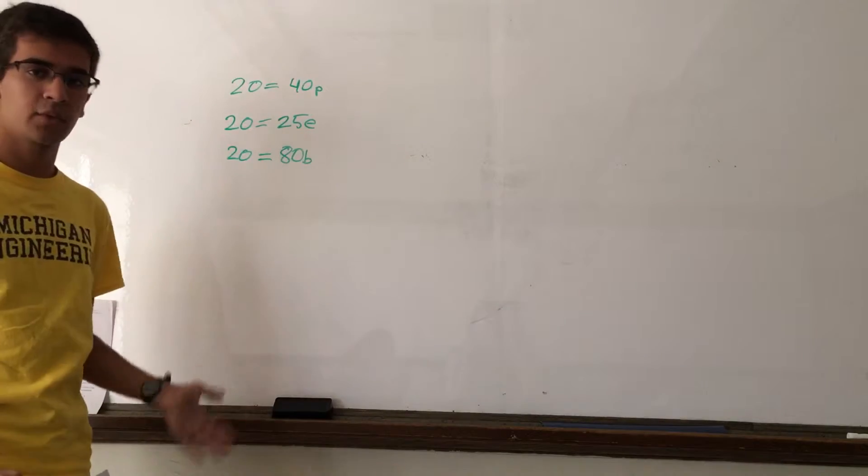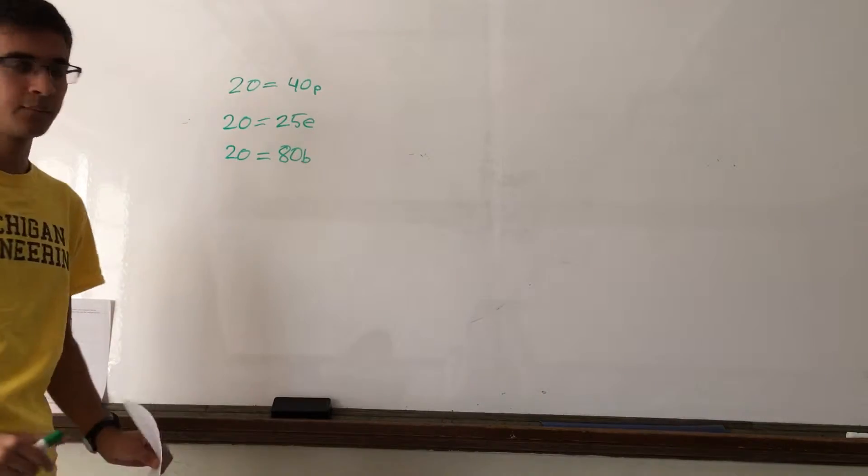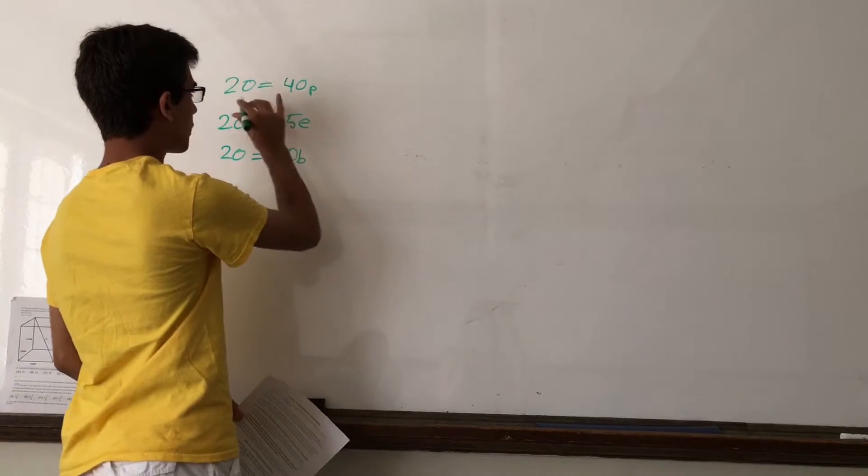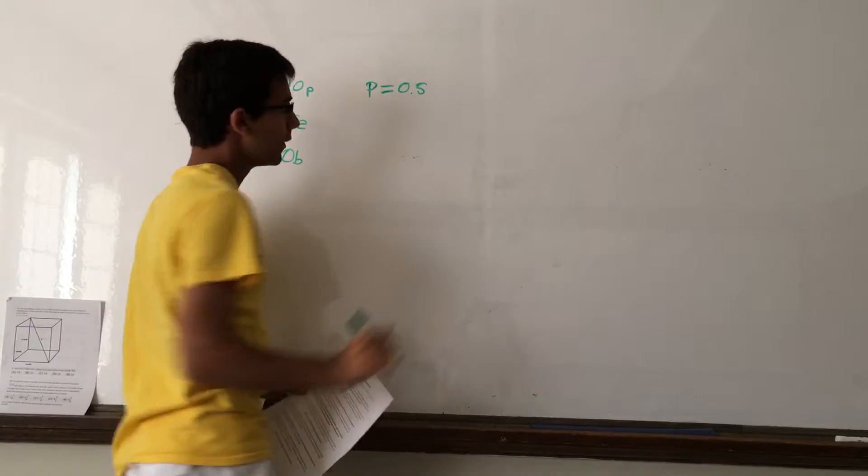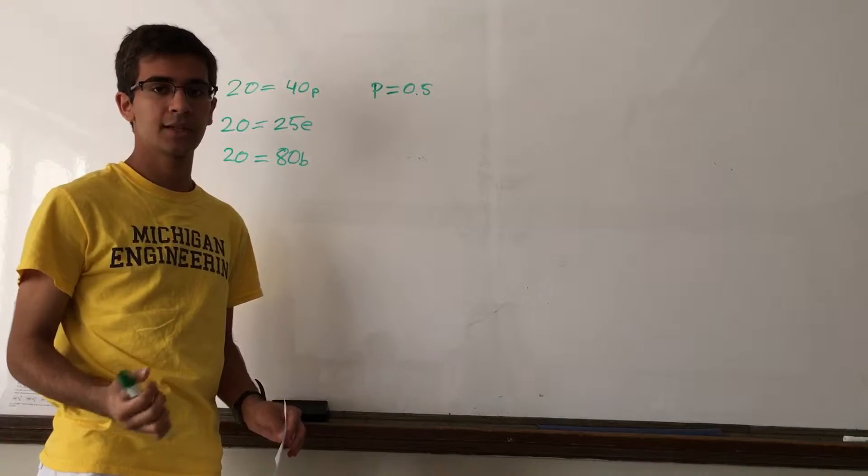Now, we only have one variable in each of these equations, so we can solve them. P is 20 divided by 40, so P is 0.5, which means that the price of each pencil is 50 cents.